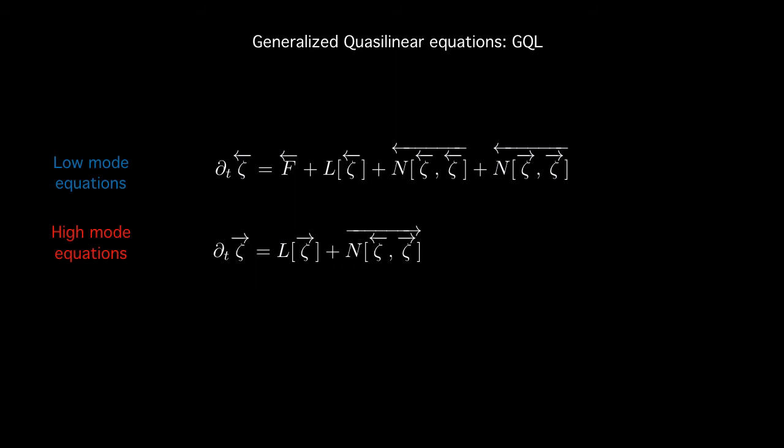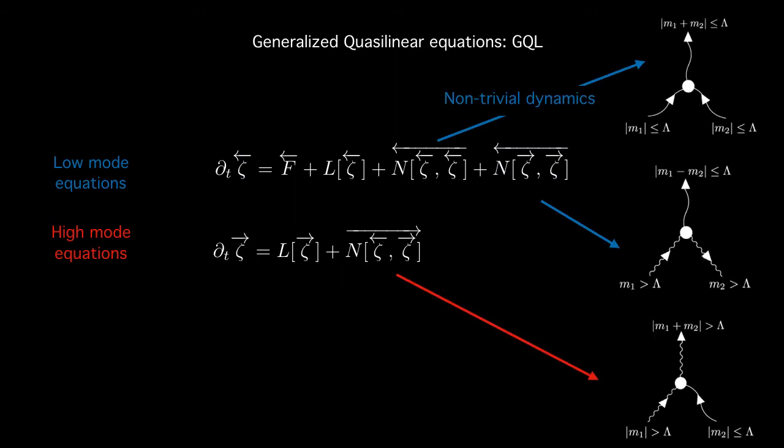So we now get a set of equations which have the same form as QL. However they have more complexity. The terms that remain are not simply products of mean and fluctuation but they involve interactions between low modes and high modes. So the non-linear term which involves two low modes giving rise to other low modes consists of non-trivial dynamics. And that's the key to the improvement that GQL helps us get over QL.